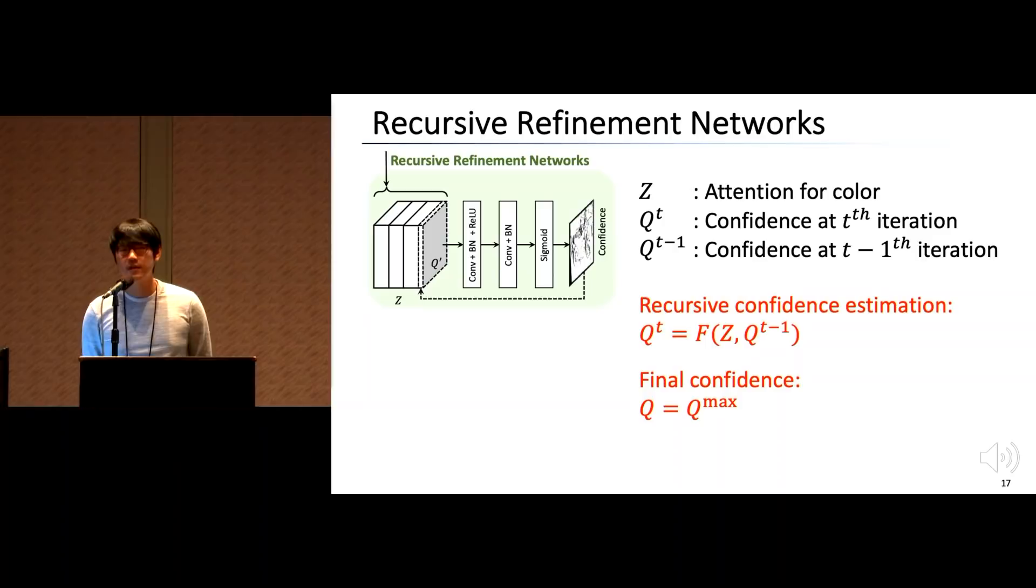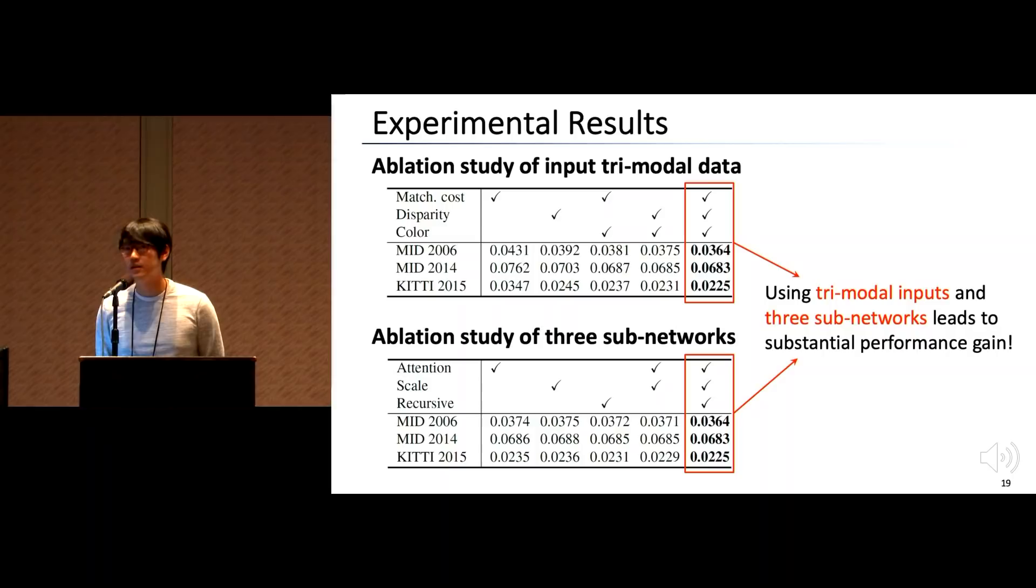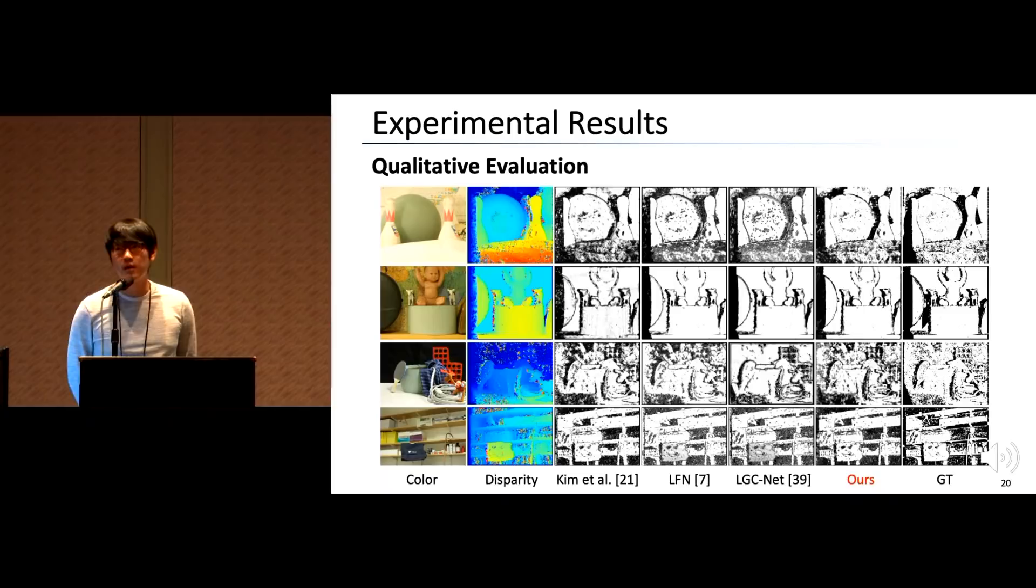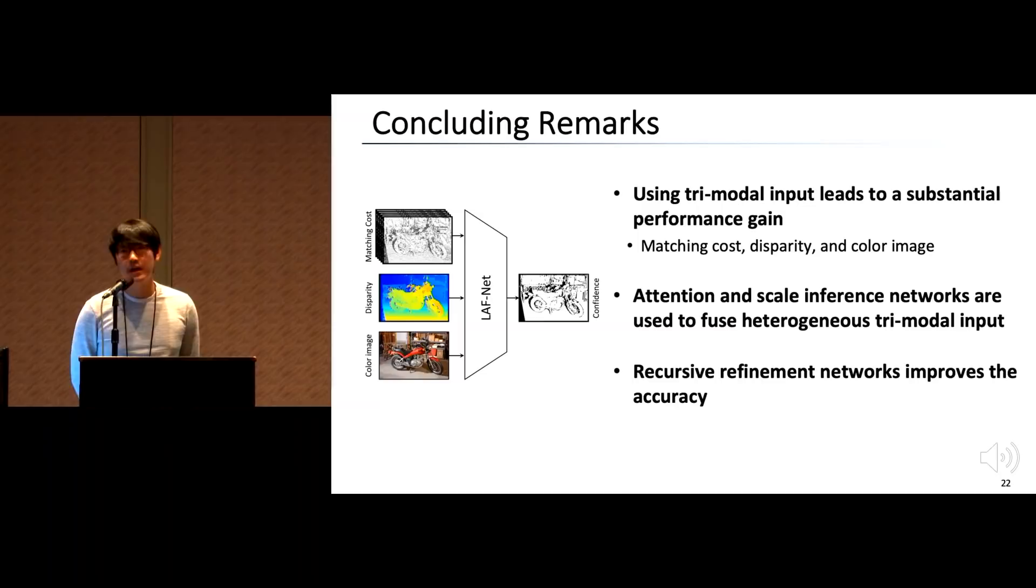On the other hand, the optimal receptive field for confidence features can vary at each pixel. So in this paper, we also propose the scale inference network that infers the optimal scale for each pixel. It infers the optimal scale at each pixel first, and then we warp the intermediate features with this scale field. Finally, we also propose the recursive refinement network where the previously estimated confidence can serve as guidance of current confidence estimation. With the four networks, we can show experimental results. This is an ablation study for input trimodal data and three sub-networks. As you can see here, using trimodal input and three sub-networks leads to substantial performance gain. In the qualitative evaluation, our LAFnet has shown the state-of-the-art performance compared to the most state-of-the-art CNN-based methods. In the quantitative evaluation, we measured the average AUC of the sparsification curve. As you can see here, our method has shown the state-of-the-art quantitatively.